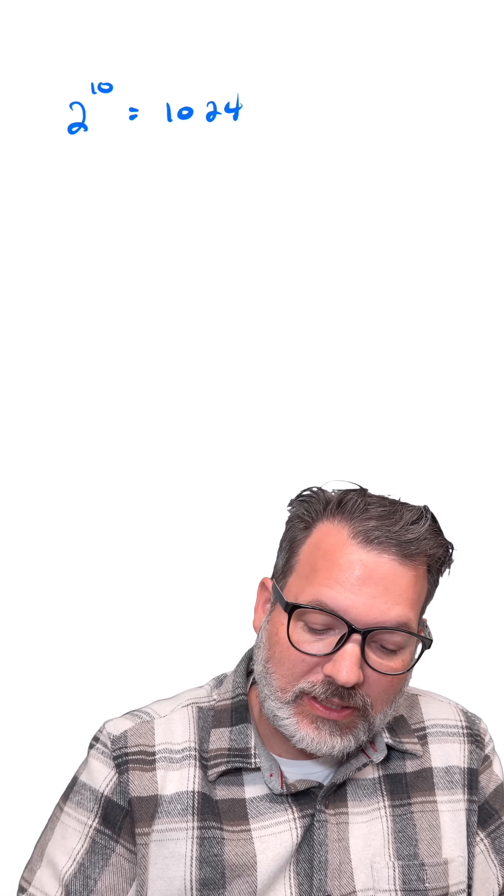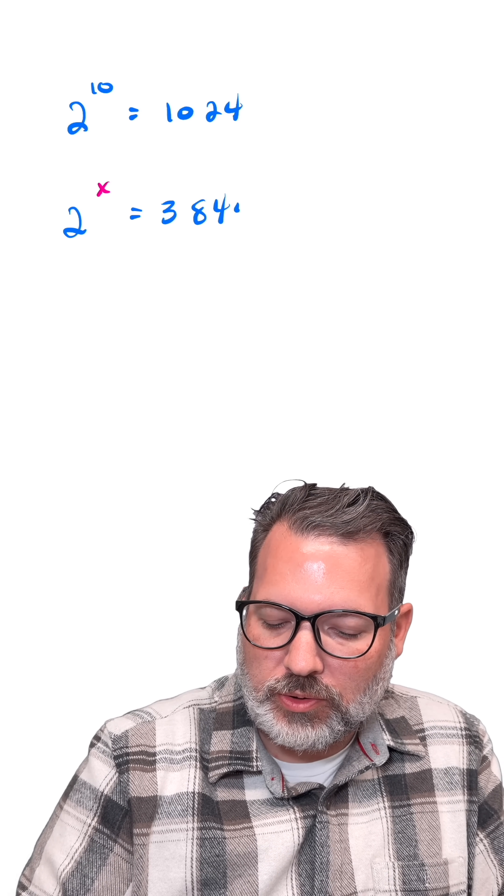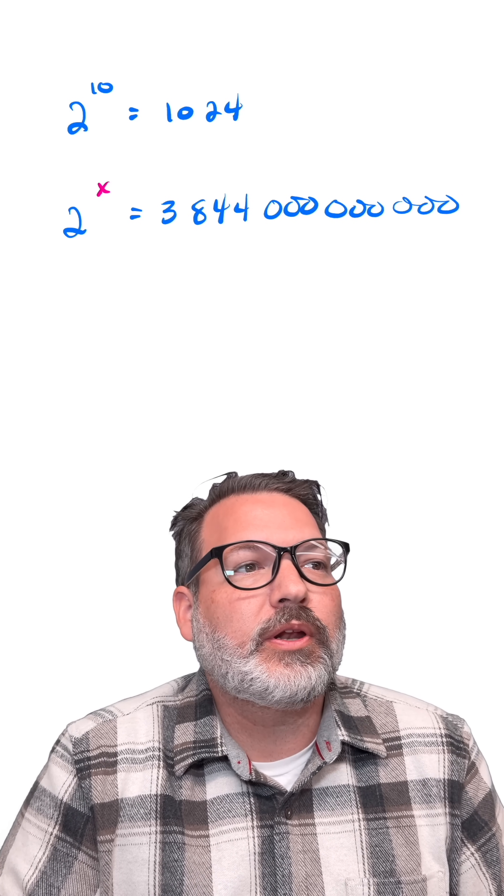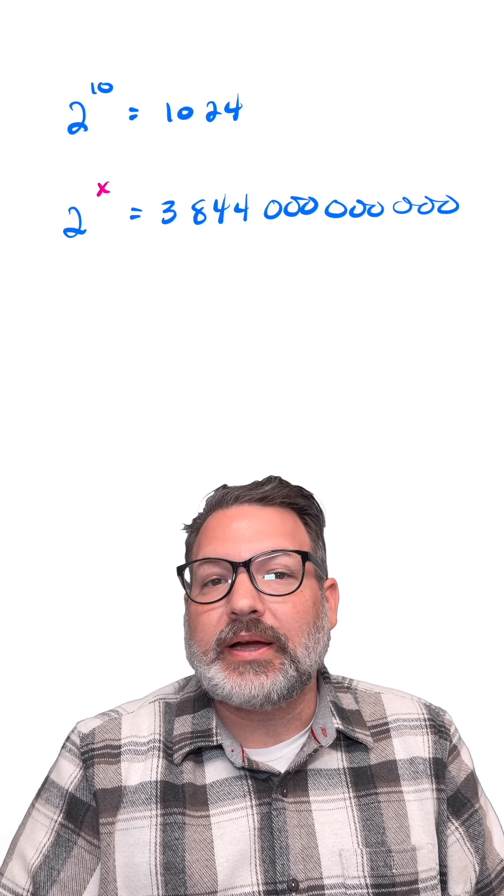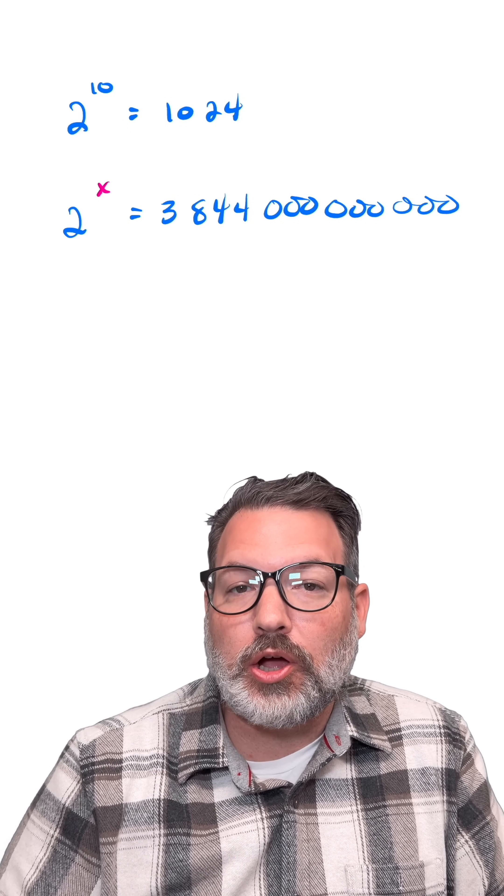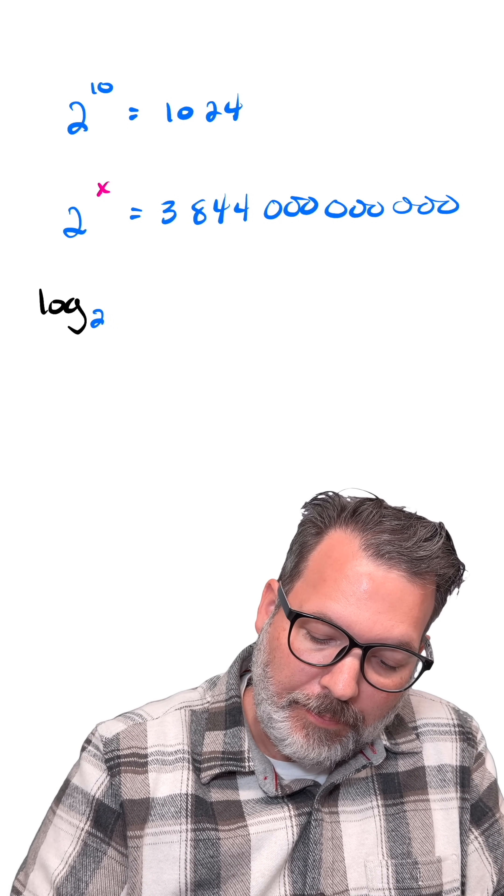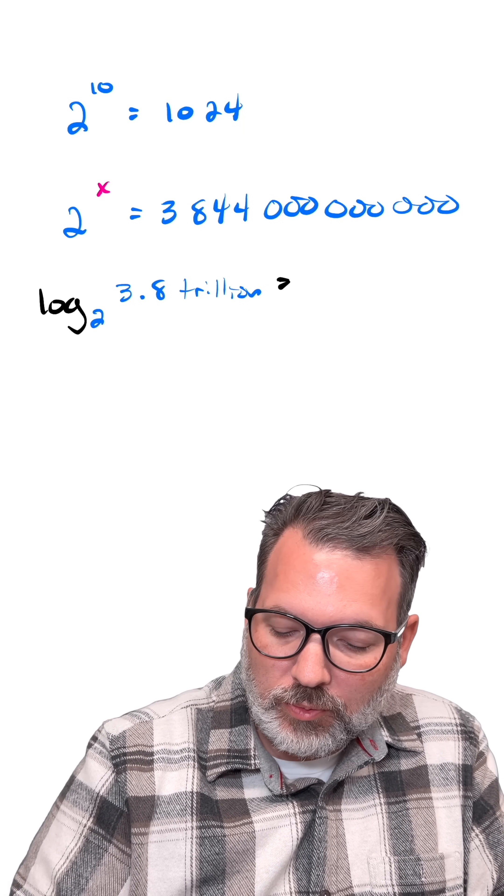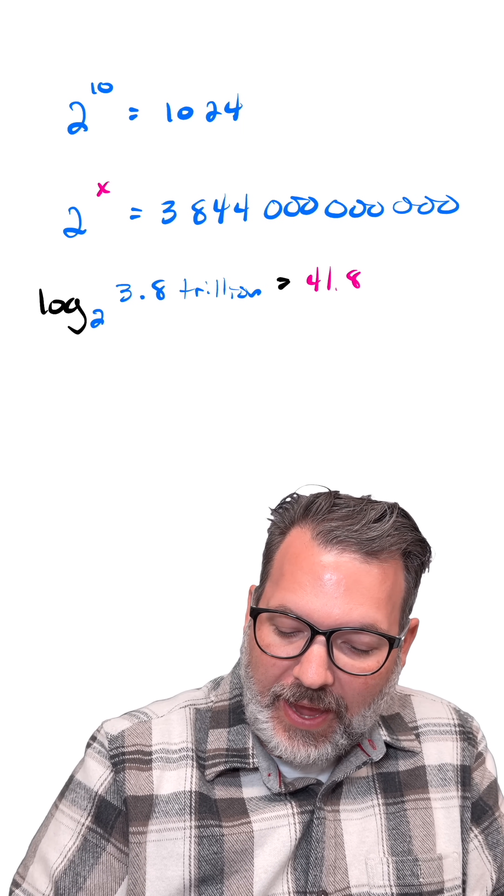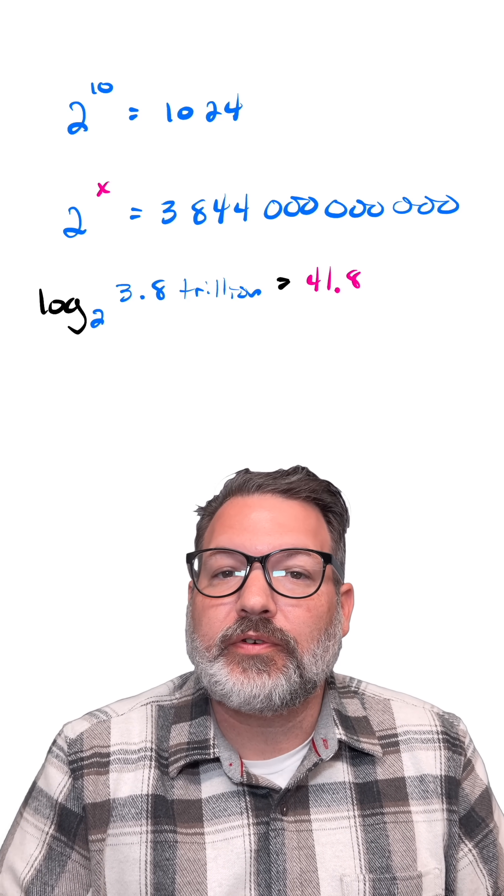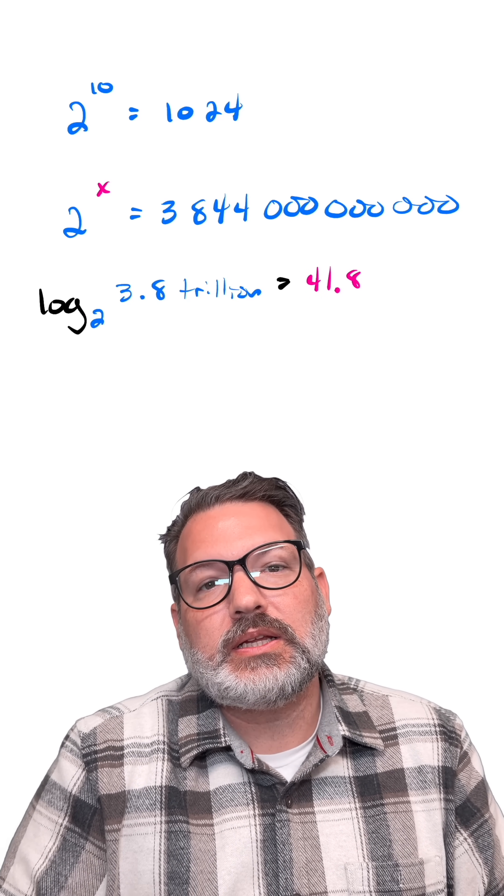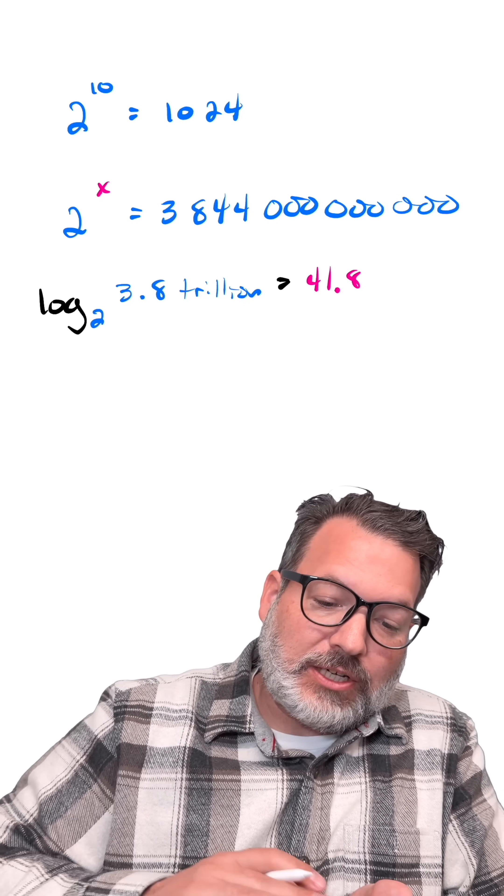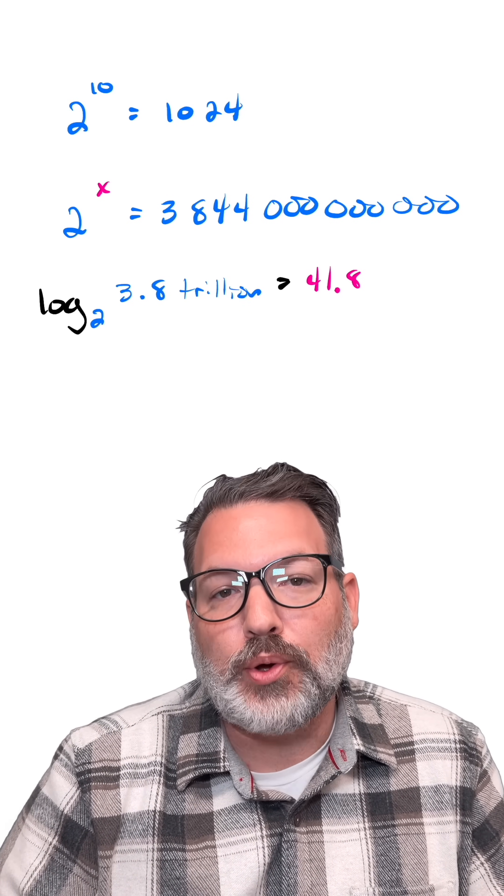What we need here is some power of two that gets us close to that 3,844,000,000,000 number from earlier. Fortunately, we don't have to sit here and actually double by twos to figure this out. We can use a tool called a logarithm. If we take the logarithm base two of this number, 3.8 trillion, we're going to get back roughly 41.8. That's where the 42 is coming from. This logarithm is telling us you would need somewhere between 41 and 42 folds to get the actual thickness you need to go from the Earth to the moon.